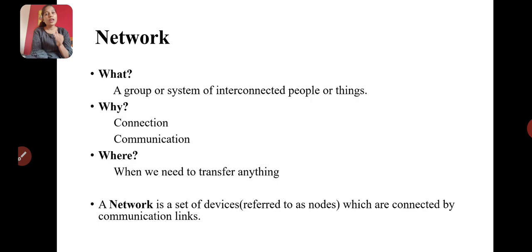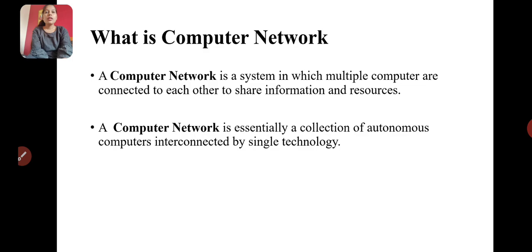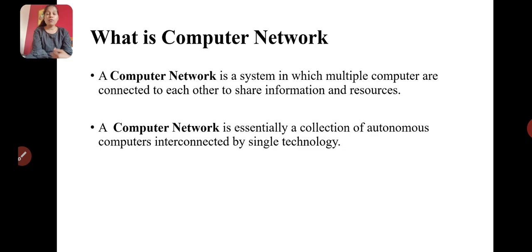Coming to the exact definition of a computer network: a computer network is a system in which multiple computers are connected to each other to share information and resources. Here, multiple computers are connected, and we connect them when we want to share some information and resources.